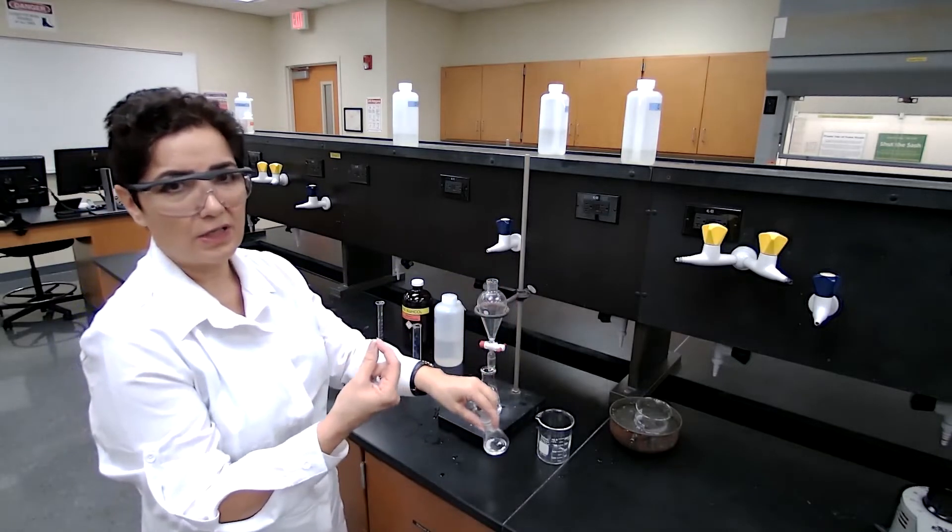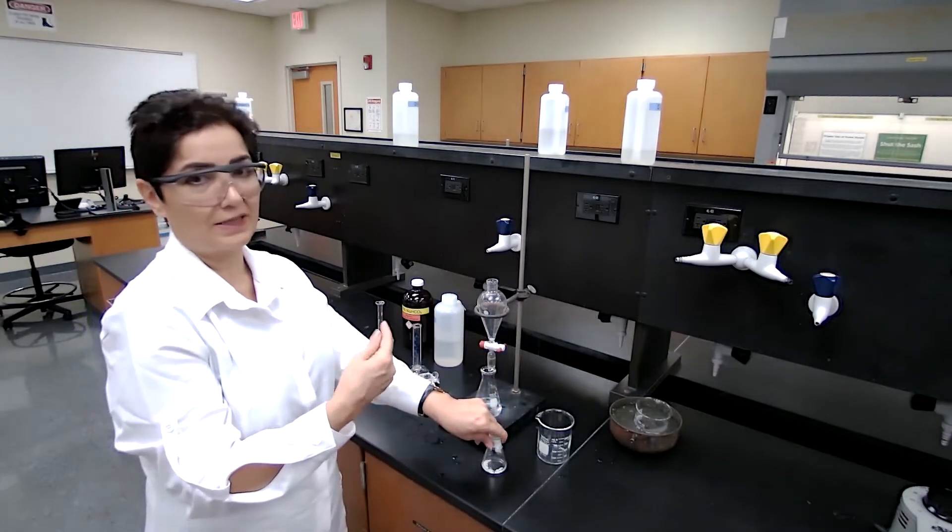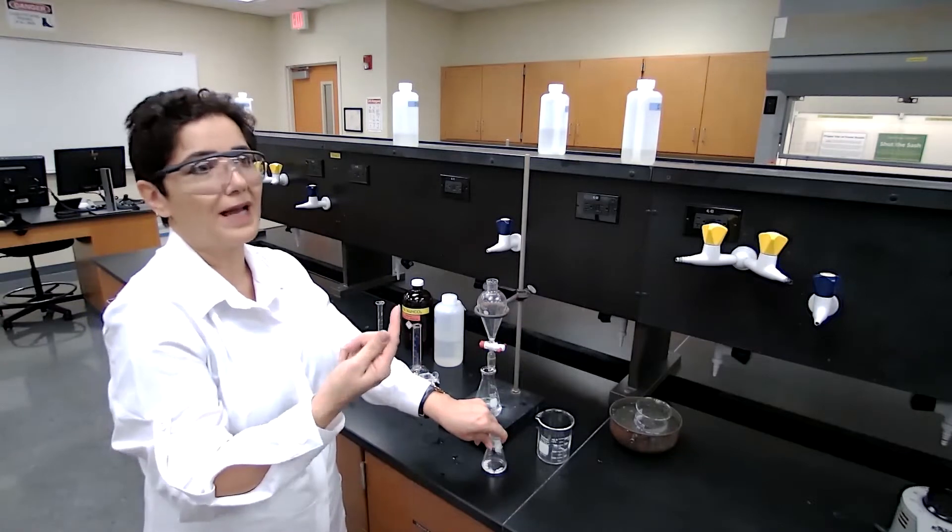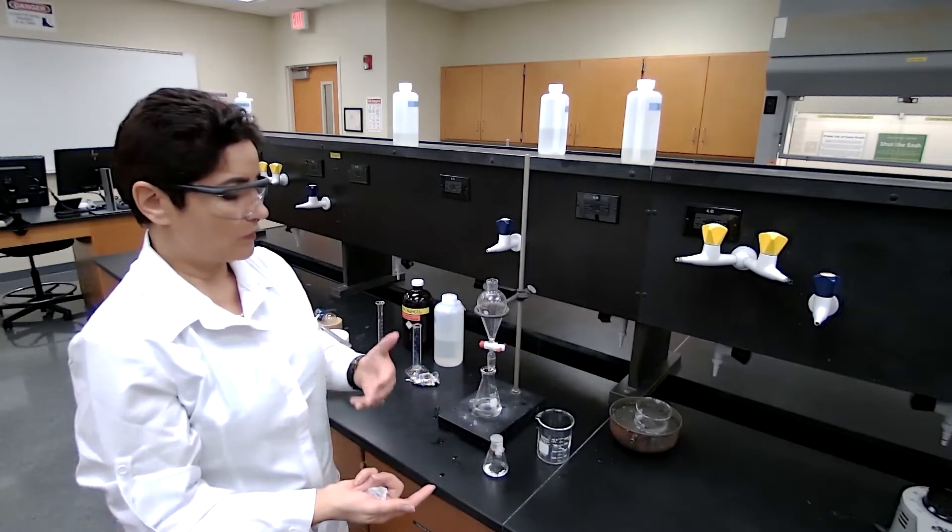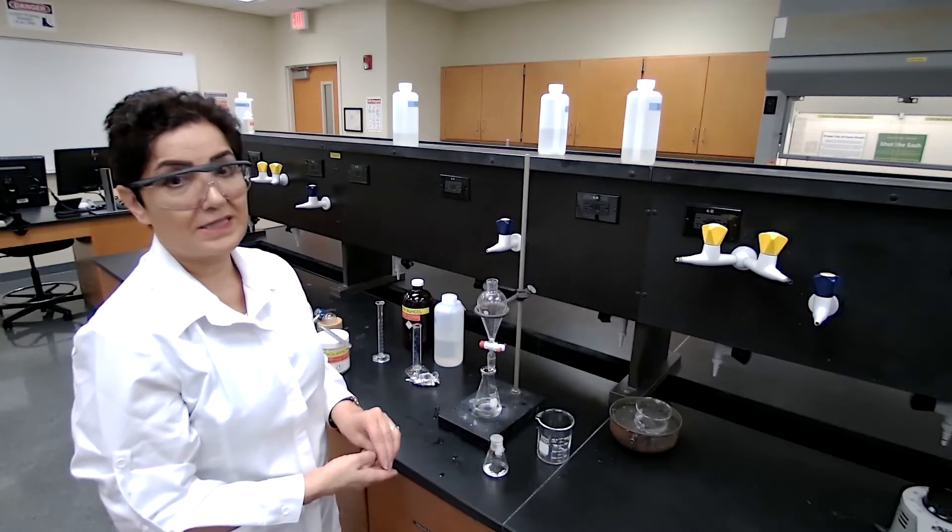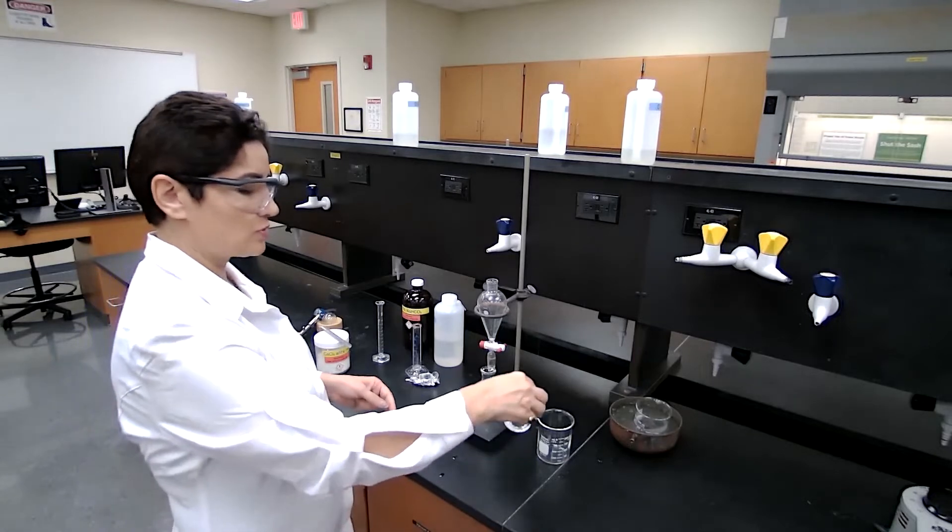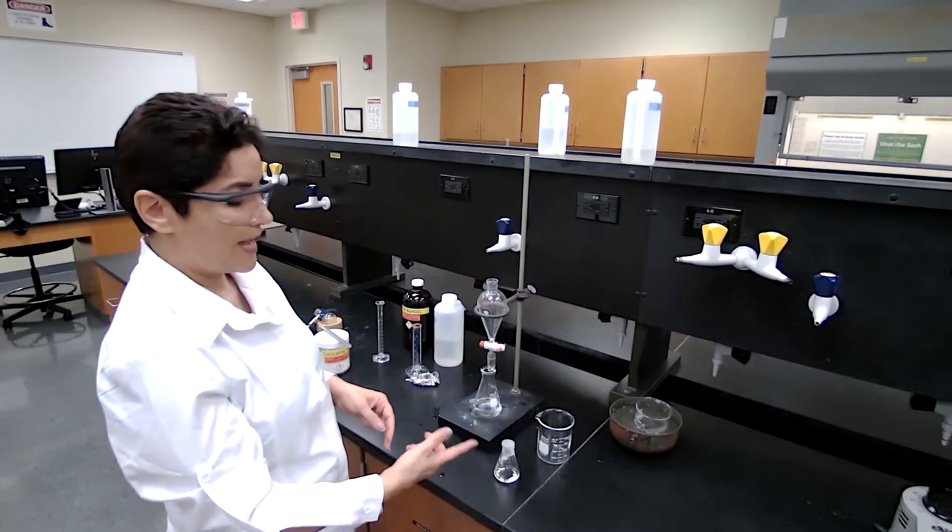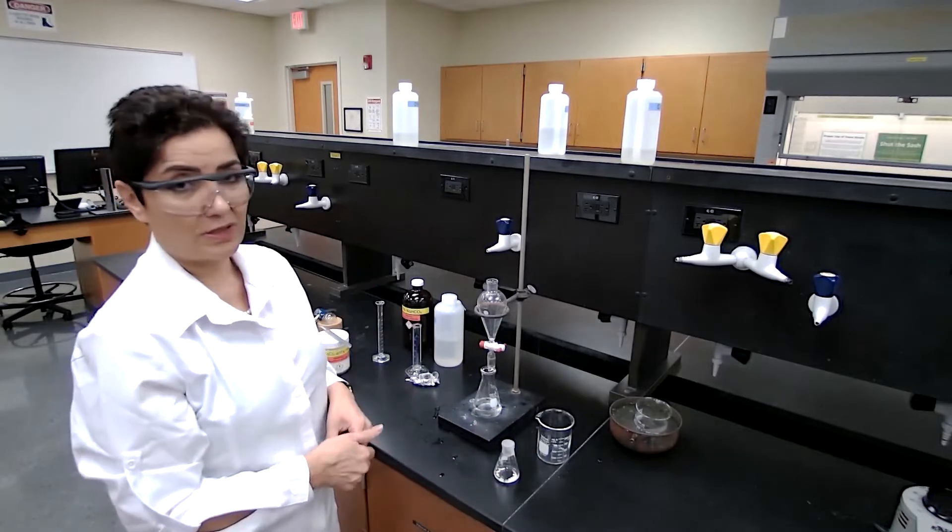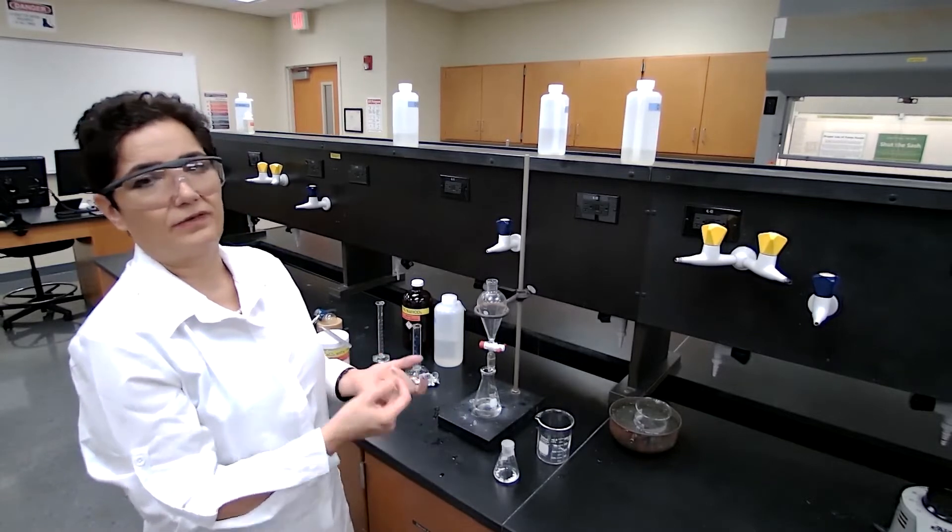For the dry sample, now I can measure the mass for percent yield and do the chemical test for the functional group. Because the cyclohexanol is not substituted and gives only one alkene product, we have one product here. But we can check for the C=C double bond with two chemical tests. I'm just going to wait two or three minutes for it to dry and measure the mass using a pre-weighed flask.